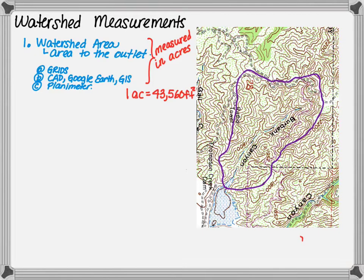Watershed area in the US is typically measured in acres. It's important to note that one acre is equal to 43,560 square feet. For very large areas there are times when the area is measured in square miles.